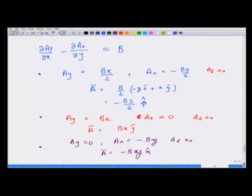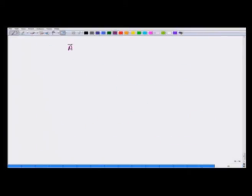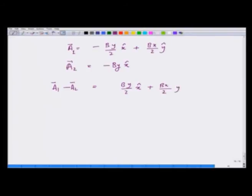Let us now look at two particular cases. I had A_1 equals minus B y over 2 in the x direction plus B x by 2 in the y direction, and I also had A_2 equals minus B y x. Let's take the difference: A_1 minus A_2 is equal to B y by 2 x plus B x by 2 y, and this you can clearly see is a gradient of B x y by 2. So you have shown that the difference between the two vector potentials is equal to gradient of a scalar field.